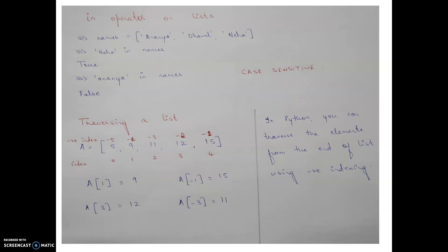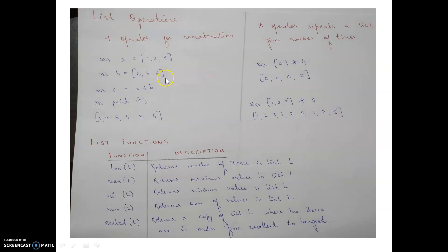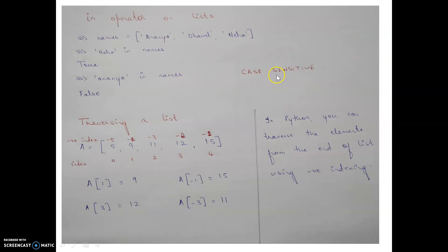The 'in' operator on lists checks the existence of an element on the left-hand side within the list on the right-hand side, returning True or False. For a list called 'names' with three elements, checking for 'Neha' returns True. Checking for 'Ananya' returns False even though it exists in the list, because Python is case sensitive — the list has a capital 'A' but the check used a lowercase 'a'.